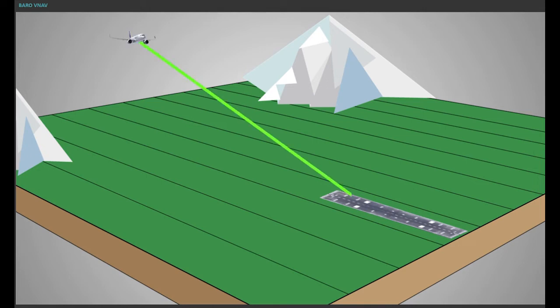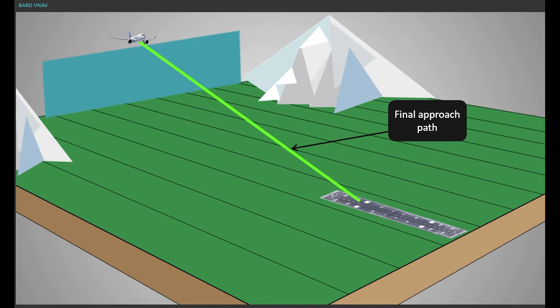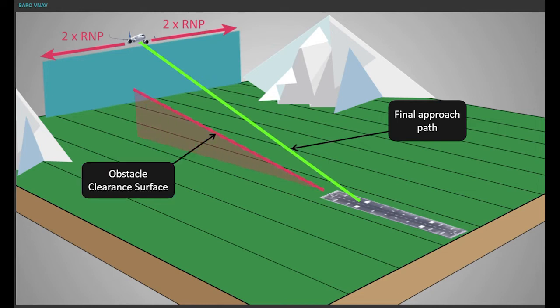The final approach segment is defined laterally by a corridor including straight and or curved segments. The width of this corridor is two times RNP on either side of the track.